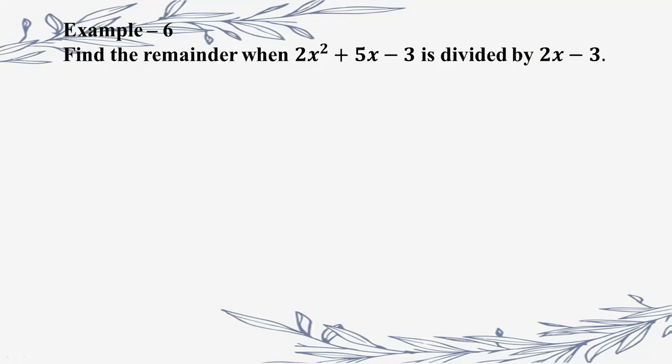The remainder: 2a squared plus 5a minus 3, so the polynomial is divided by 2x minus 3. Let f of x be equal to 2x squared plus 5x minus 3.